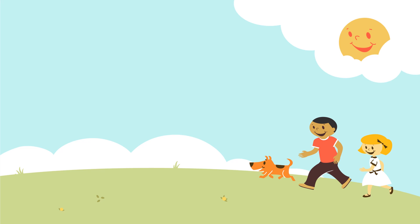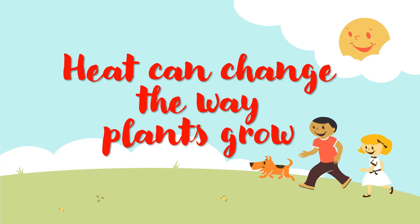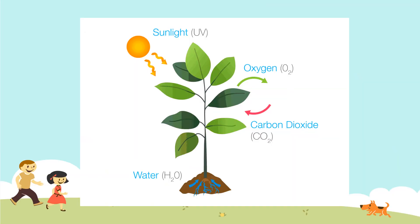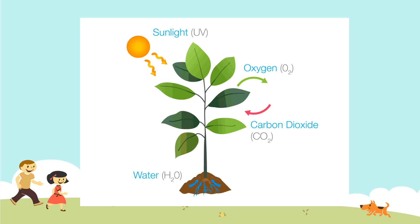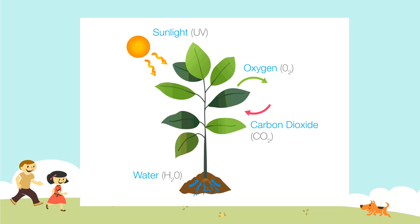Hi everyone! We're going to talk about how heat can change the way plants grow. High temperatures affect plant growth in many ways. One example is the effects of heat on photosynthesis, in which plants use sunlight, water, and carbon dioxide to make food and produce oxygen.